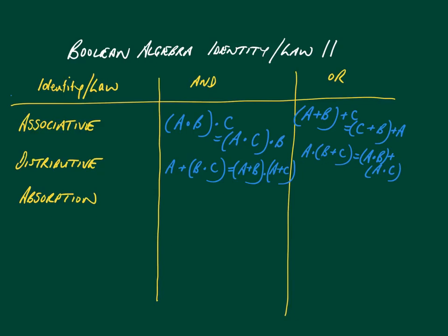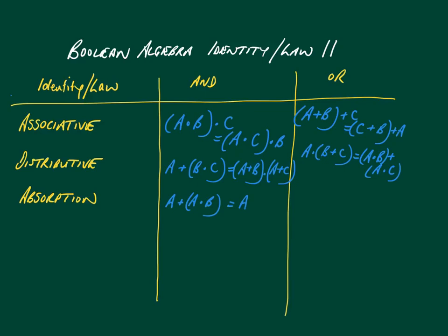Absorption needs a little explanation — it allows us to simplify a Boolean algebra expression. If we have a OR (a AND b), we can follow this through: if a is 1, the output is 1 because it's an OR gate. If a is 0 and b is 1, a is 0 gives a 0 for the top of the OR gate, and 0 going into an AND gate also gives 0. So we can simplify: a OR (a AND b) is just a.